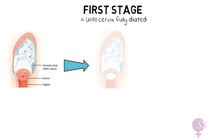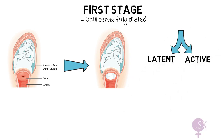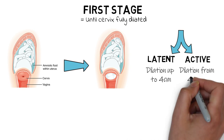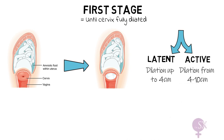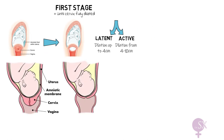The first stage of labor refers to the process by which the cervix becomes fully dilated — that is, dilated up to 10 centimeters. The first stage of labor is divided into two phases: the latent phase and the active phase. During the latent phase the cervix is slowly dilating up to four centimeters and we have regular uterine contractions. This phase can take up to several hours. Then we have the active phase where we have painful regular contractions which result in the cervix becoming fully dilated.